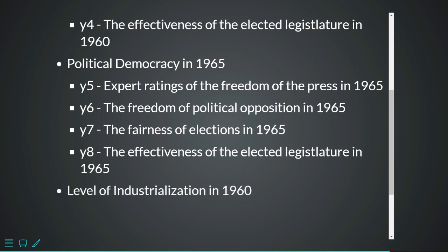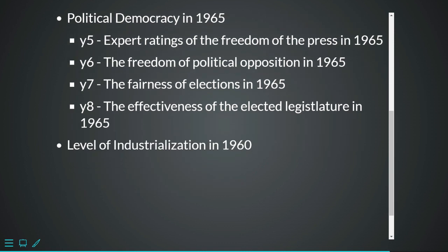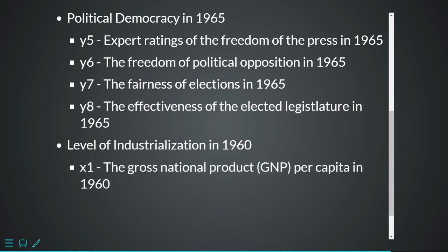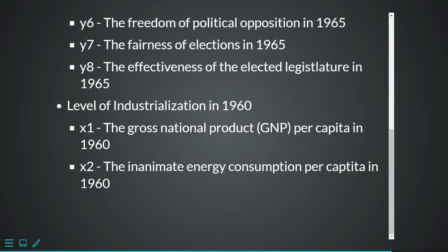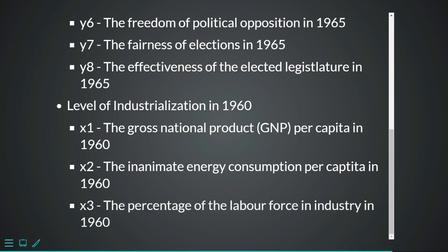The last latent variable is the Level of Industrialization in 1960. The observed variables measuring this latent variable are: x1 - gross national product per capita in 1960; x2 - inanimate energy consumption per capita in 1960; and x3 - the percentage of the labor force in industry in 1960.